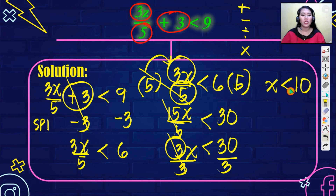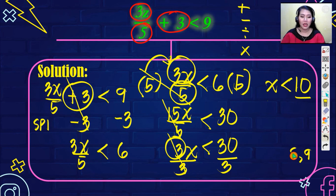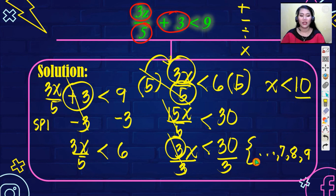So the numbers less than 10 — we have 9, 8, 7, and so on. That is your final answer for number 5.